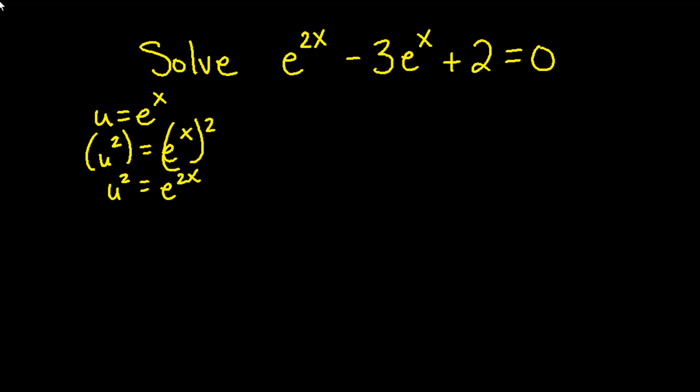This is what allows us to substitute u squared for the first term and u for the middle term being multiplied by the negative 3. At this point we can factor this polynomial. u times u is u squared and negative 2 times negative 1 equals positive 2 and adds up to negative 3.